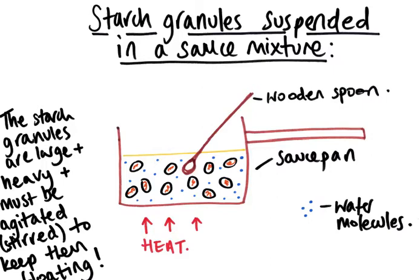The starch granules are so big and heavy that we have to stir the sauce to keep them afloat, otherwise they drop to the bottom and burn. So these big starch granules are being agitated or stirred to keep them afloat in our sauce, with lots of water molecules surrounding them. When we're making a sauce, we're doing this on the hob in a saucepan and we can see that we're applying heat.